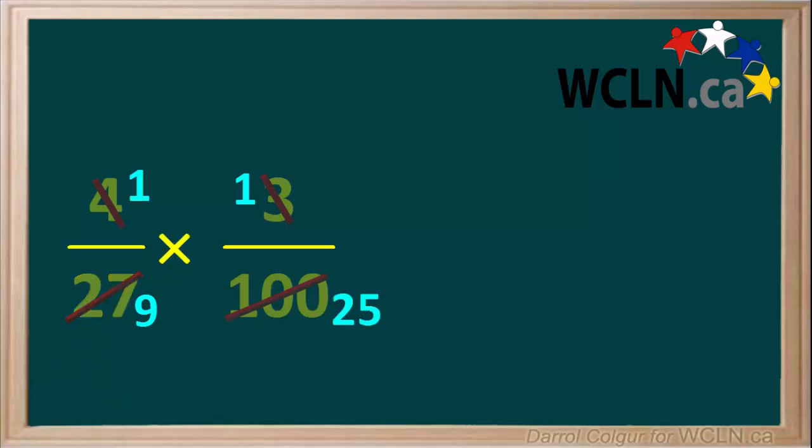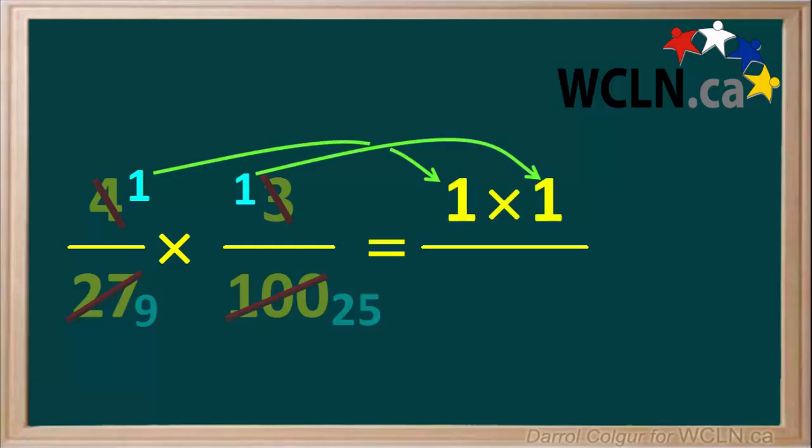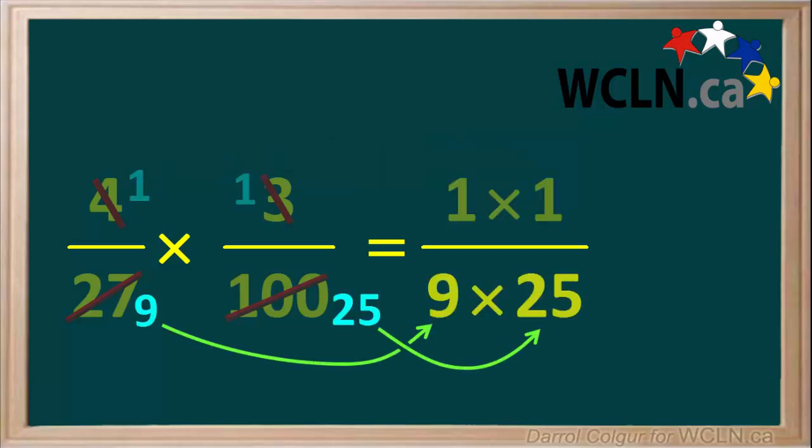Now we have 1 and 1 in the numerator and 9 and 25 in the denominator. We can now write a new fraction which has 1 times 1 in the numerator and 9 times 25 in the denominator.